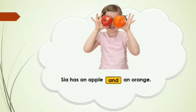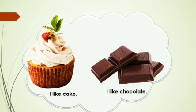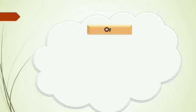It tells us that Sia has an apple as well as an orange. Here is another example: we can join two sentences with the conjunction 'and,' and the new sentence will be: I like cake and chocolate. Here, 'and' is used to join two things — cake and chocolate.